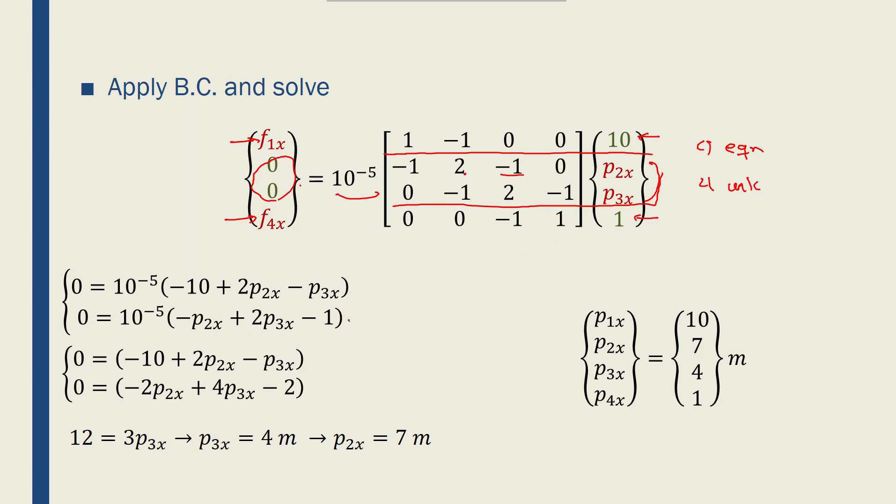Now if I multiply this by 2 and rewrite the equations, I'll end up with these two equations. And if I add them together, these terms will cancel out. I will end up with 12 equals 3p3x minus p3x, which means p3x equals 4. And if I put this value in any of these equations, I will end up with p2x equals 7 meters. So finally, I'll end up with the nodal potentials in this problem.